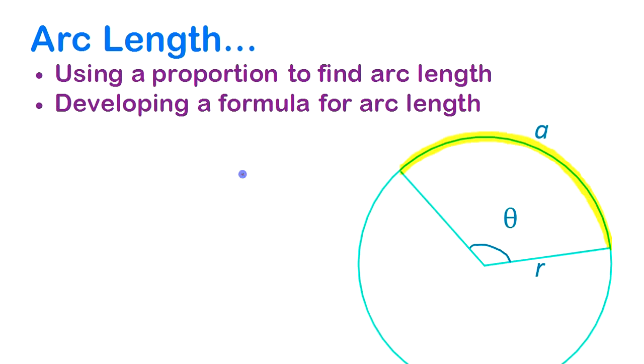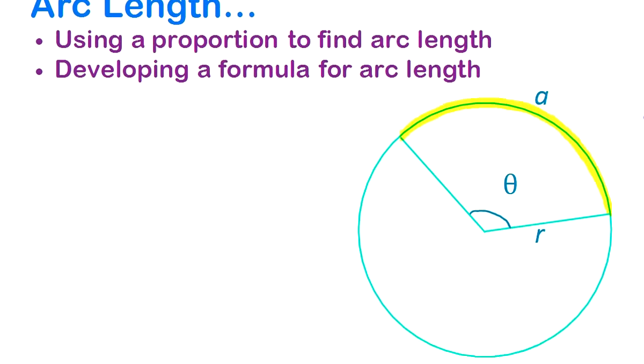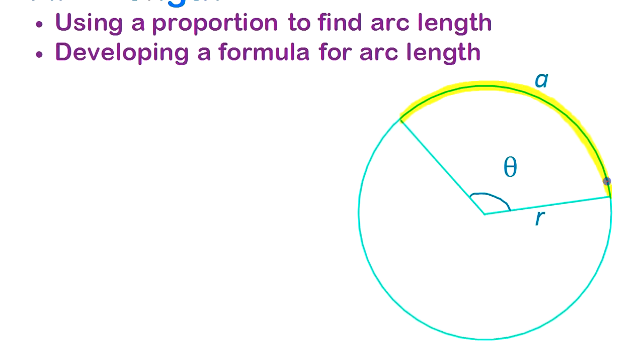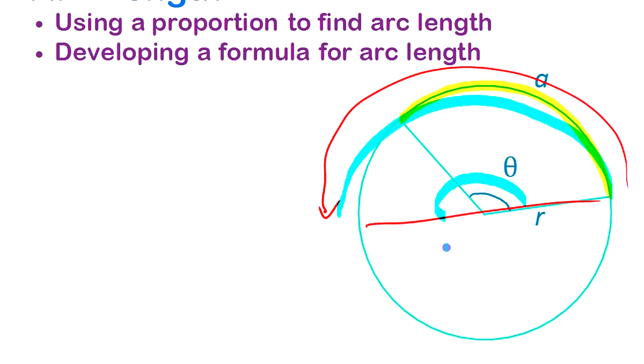Now we're going to start by writing a proportion for this because it should be proportional. Think about if you were halfway around the circle—the distance around the outside would be half the circumference and the angle would be half the angle. If you're three quarters of the way around, the angle would be three quarters of the way around. So it should be proportional there.